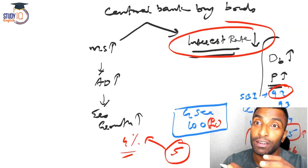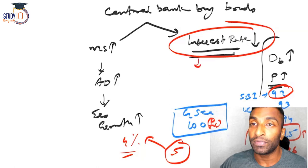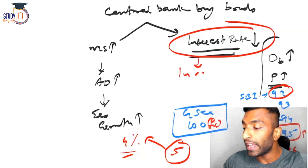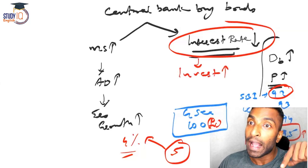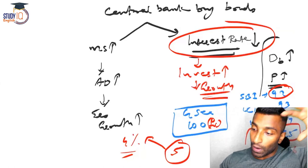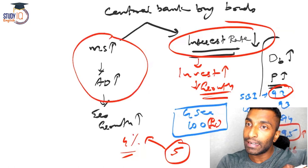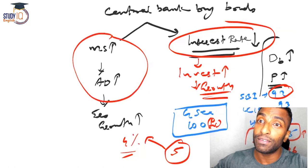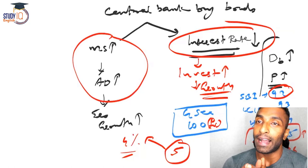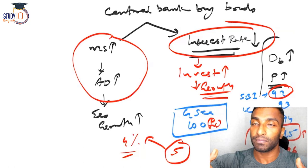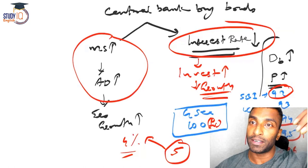Is a reduced interest rate a good thing? Yes. When interest rates are reduced, firms get money at a cheaper rate, which leads to increased investment, which promotes growth. So on one side, QE fulfills the demand-side requirement, and on the other side, it enables cheaper savings and further investment — both promoting growth. This is what developed countries get from quantitative easing.